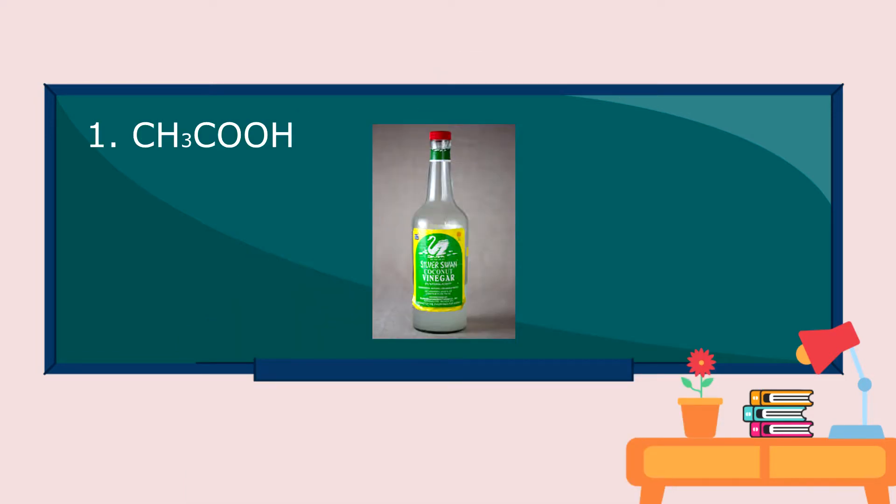Now, let's examine the chemical formula and its chemical name and common name of the following. One. This is an acetic acid solution. It is commonly called as vinegar. It means that acetic acid is physically combined with water. And vinegar is a mixture.